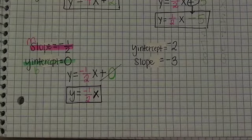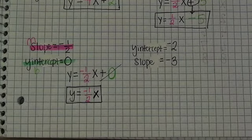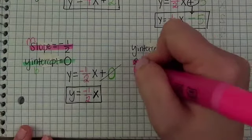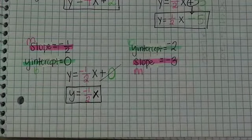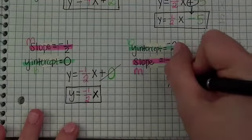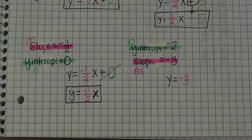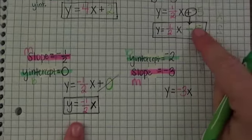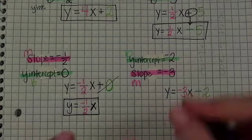Now look at this next one — there's a part that's trying to trick you. The y-intercept is actually negative two and the slope is negative three, but they switched the order. So the slope is negative three, which is m, and the y-intercept is negative two, which is b. The equation would be y equals negative three x, and then same as before, plus a negative two — or just minus two — and that would be our equation.